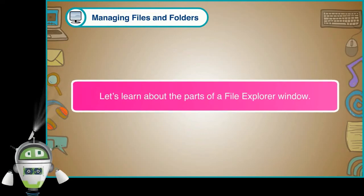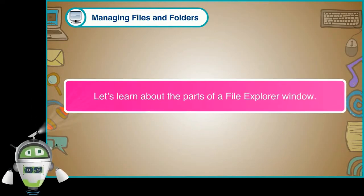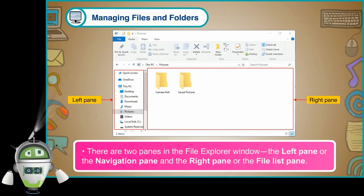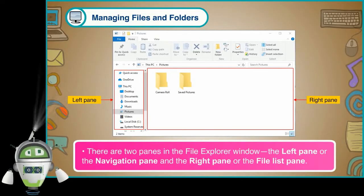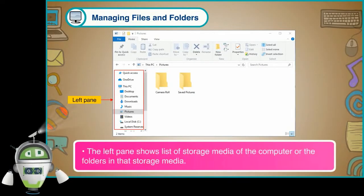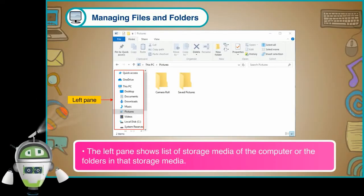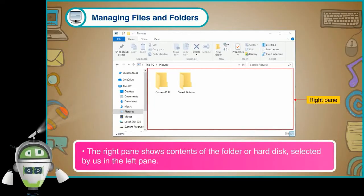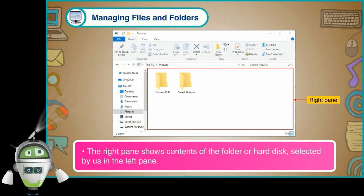Let us learn about the parts of a file explorer window. There are two panes in the file explorer window: the left pane or the navigation pane, and the right pane or the file list pane. The left pane shows a list of storage media of the computer or the folders in that storage media. The right pane shows the contents of the folder or hard disk selected in the left pane.